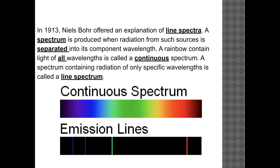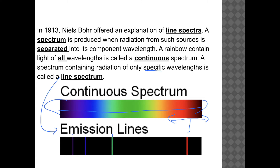In 1913, Niels Bohr offered an explanation for line spectra. A spectrum in general is produced when radiation is separated into its component wavelengths, like a rainbow — a continuous spectrum with all possible wavelengths. A spectrum with only specific wavelengths is known as a line spectrum, emission spectrum, or emission lines. These particular wavelengths are very specific, and a line spectrum is actually unique to an element — almost like a fingerprint.